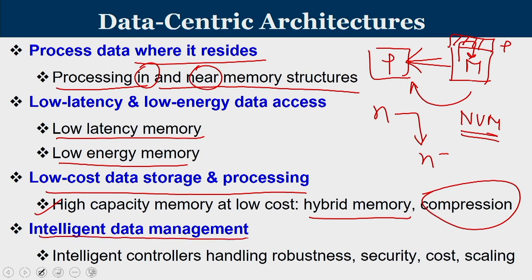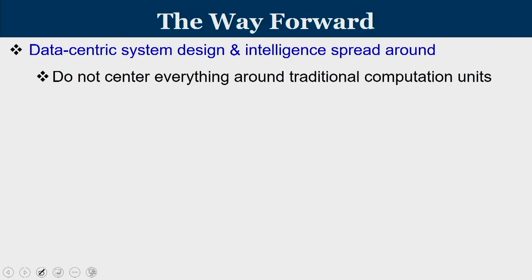We should also have intelligent data management, done with the help of intelligent controllers. We have seen DRAM controllers and hard disk controllers. Can these controllers be made more intelligent so they can manage data well, while also handling robustness and security of hardware? Can we take care of security threats and trojans while keeping in mind cost and scaling? The way forward is to design data-centric systems with intelligence spread around them.